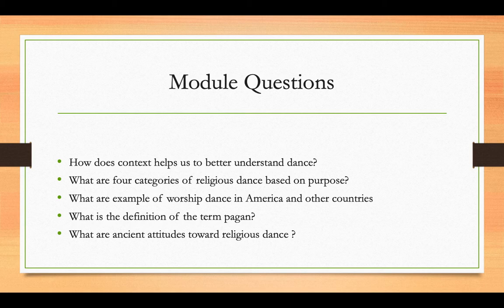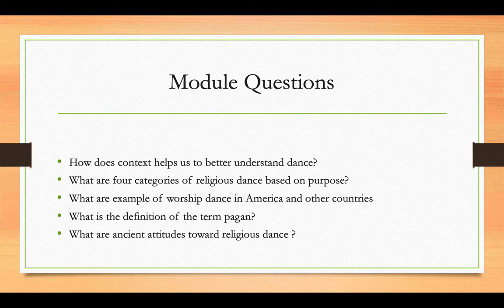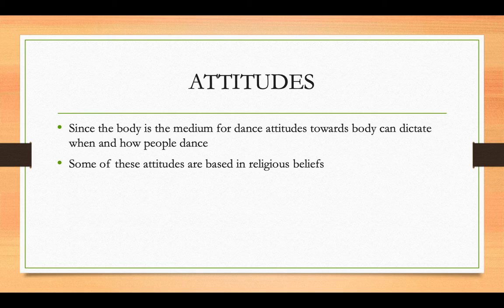Here are our module questions — the questions you want to be able to answer by the end of this unit. How does dance context help us to better understand dance? What are the four categories of religious dance based on purpose? This is listed also in your reading, so please make sure you are doing the reading. What are examples of worship dances in America and in other countries? What is the definition of the term pagan? And what are some ancient attitudes towards religious dance?